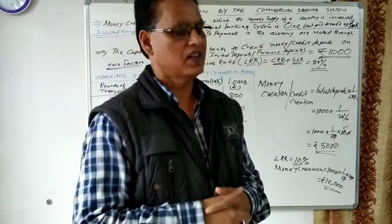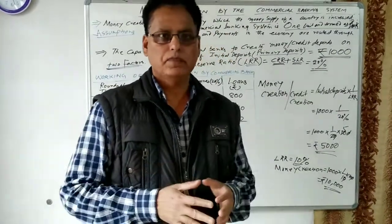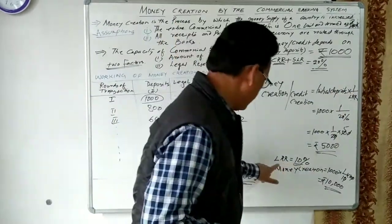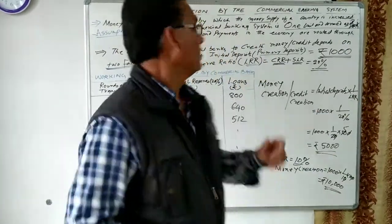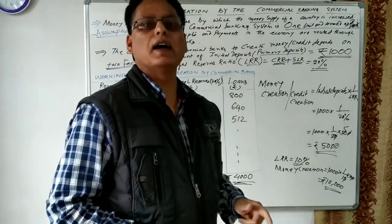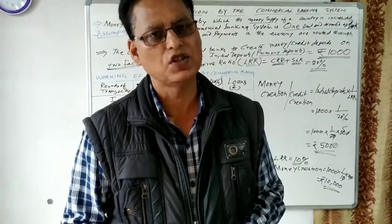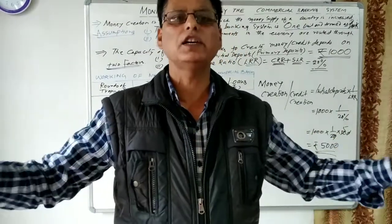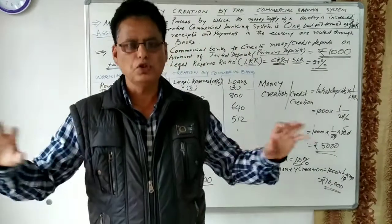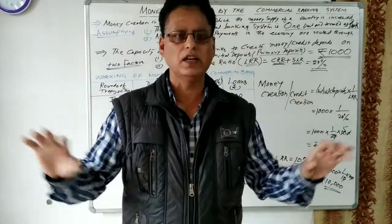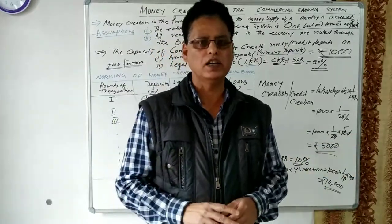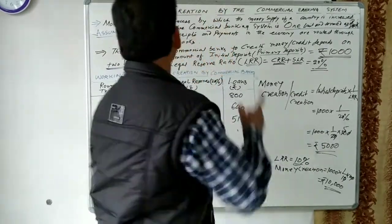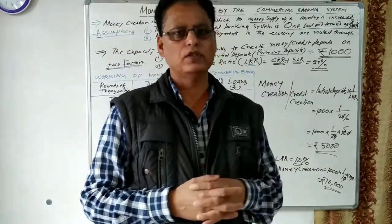The LRR is sometimes increased and sometimes decreased. To increase aggregate demand and the circulation of money, the LRR is decreased. Money creation by commercial banks is related to economic growth: when more money is created and circulated, production increases, consumption increases, the standard of living improves, and the overall circulation of money rises. The concept of money creation by the commercial bank should now be clear.